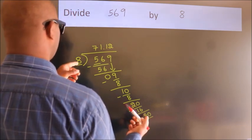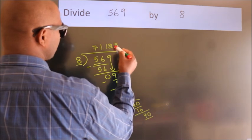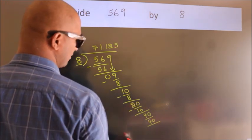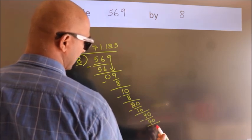In 8 table, 8 times 5 is 40. Now we subtract. We get 0.